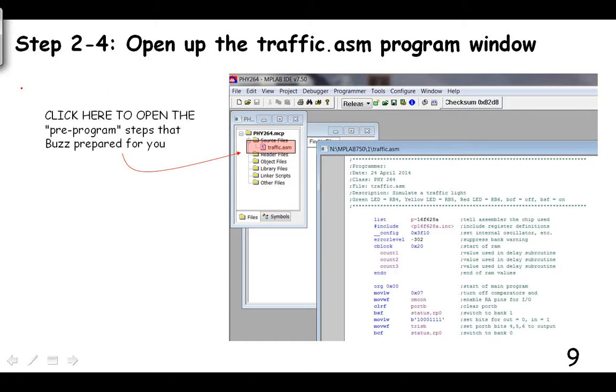Open up the, so once you've opened that up, then find this little window right here, double click on the traffic, which is the actual program Buzz wrote, and then it'll open this window. And then you can see the programming steps that Buzz has included for you to get everything rolling. So he's done a lot of the preliminary work for us. All we have to do is program it to act like a stoplight.